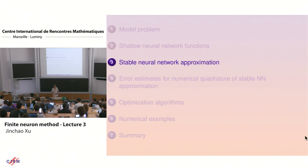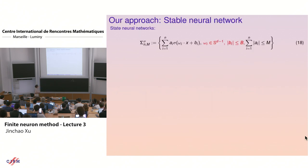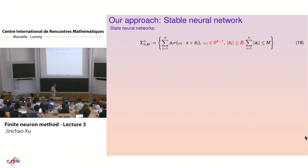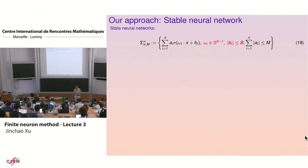Since we couldn't prove Bernstein inequality, we use stable neural network functions — sigma_{n,M} — where the coefficients are bounded. With ReLU or similar activations you can put things in a compact bounded set. The key mathematical point is that the coefficients must be under control. Using metric entropy theory, I try to convince you that you must put a bound on the size of the coefficients — otherwise the rate of convergence doesn't really make sense.